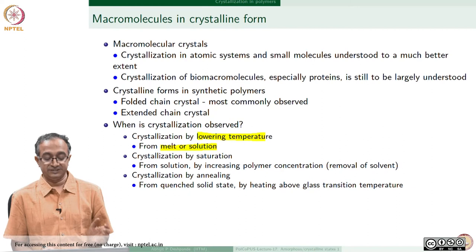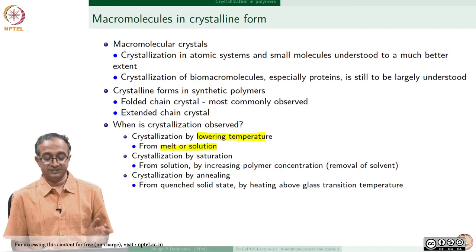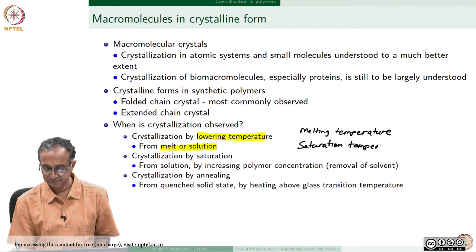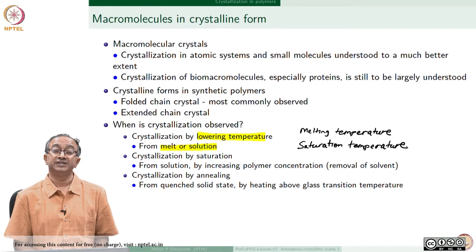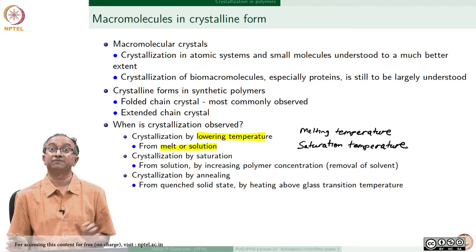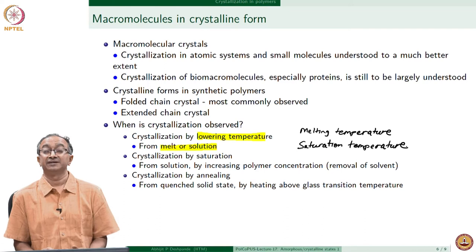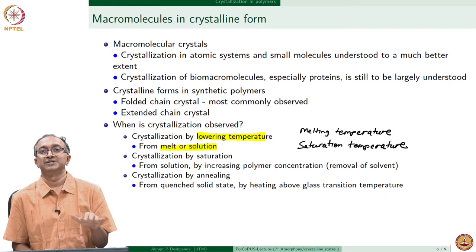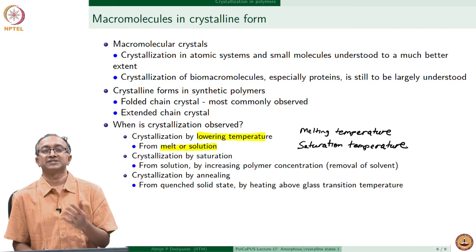To summarize when crystallization is observed in polymers: it occurs when we lower the temperature below the melting temperature — which we will define soon — or below the saturation temperature in the case of a solution. Saturation can be achieved by changing solvent concentration through evaporation. There are a variety of techniques for removing solvent: heating, lowering pressure by vacuum application, or freeze drying. In macromolecular systems, how you do this determines what kind of crystals you get, because the rate of crystallization is strongly influenced by the conditions of crystallization.